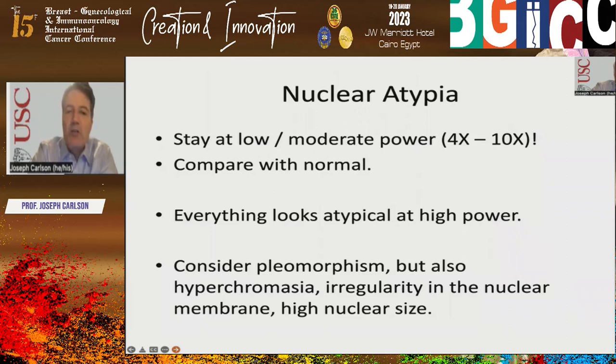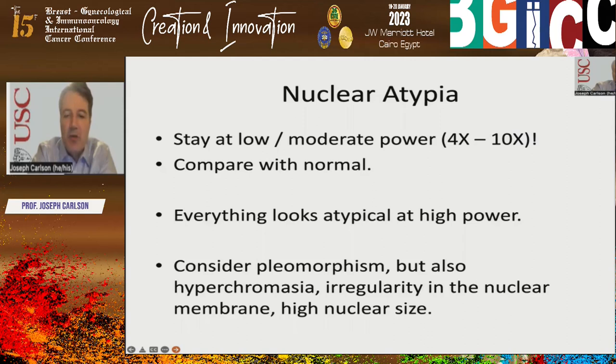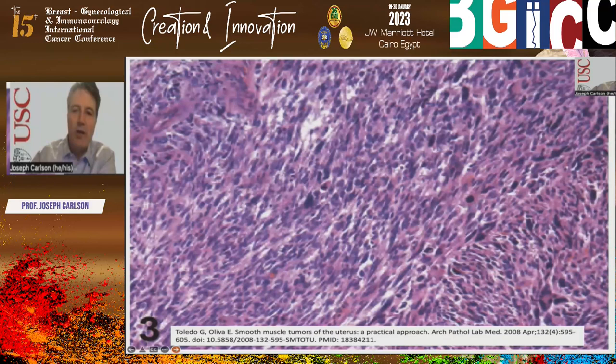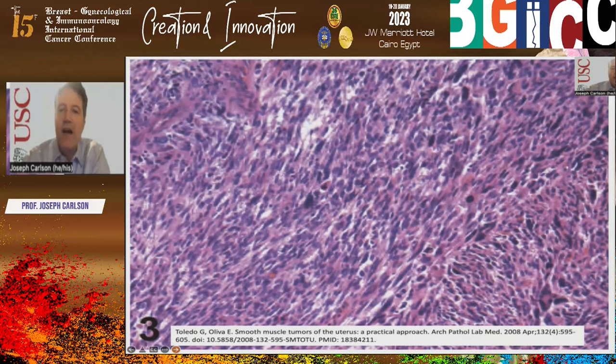Nuclear atypia should be assessed at low to moderate power — 4x to 10x objective. Everything looks atypical at high power. Compare with normal smooth muscle. Consider pleomorphism, but also hyperchromasia, irregularity in the nuclear membrane, and an increase in nuclear size. Even if the nuclei don't show much pleomorphism, take these other factors into account. High-grade atypia shows hyperchromatic, pleomorphic nuclei even at moderate power.